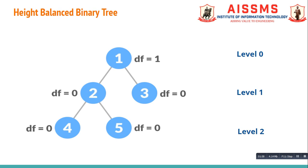Next, both left and right subtrees should also be balanced, meaning the difference between heights of their left and right nodes must not be more than 1. Considering node 2, both its child nodes are at the same level, so the difference between heights of left and right child of node 2 is 0. Nodes 4, 5, and 6 do not have any child nodes, therefore these nodes are also balanced. Therefore, the given binary tree is height balanced.